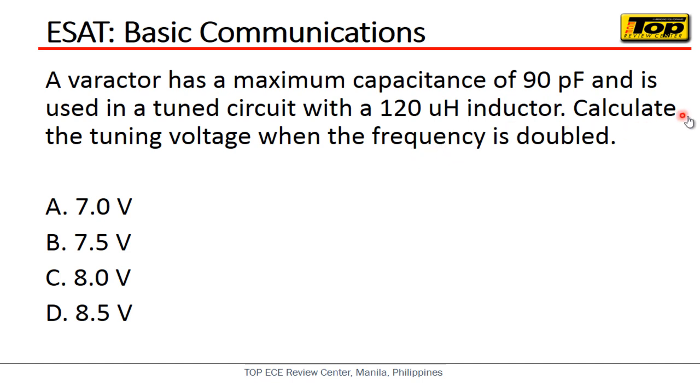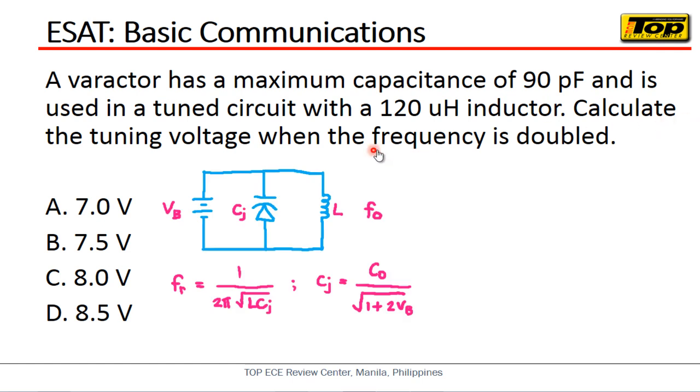To give you some insight on that, let us have some basic idea about the varactor. Now this is a simple circuit, a tuned circuit where you have a varactor with a junction capacitance CJ, together coupled with of course the inductor to make the tuned circuit complete. And of course the varactor has a bias voltage. This is actually the tuning voltage - this is what we're looking for. Now if we're going to solve for the output frequency of this circuit, that will be the resonant frequency. And that is simply equal to 1 over 2π square root of LC_J. It's just that simple.